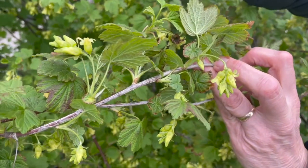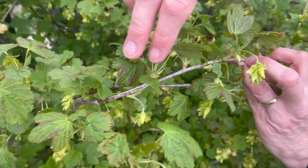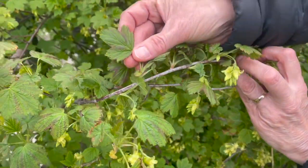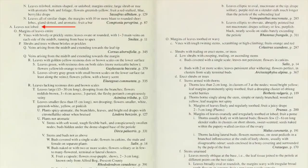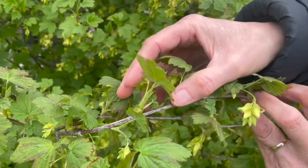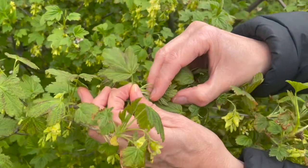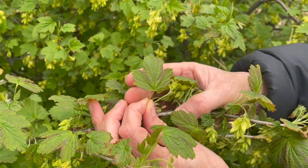Here is the shrub that we will be identifying. You can see that it has alternate simple leaves, which will bring us to key four. We will now read the first option in this key — A: leaves deeply or shallowly cut or lobed, the segments or lobes blunt, rounded, or sharp pointed. The other option A on the next page reads: leaves not lobed. You can see that the leaves of this shrub are toothed and lobed, so we will go with the first option, A.